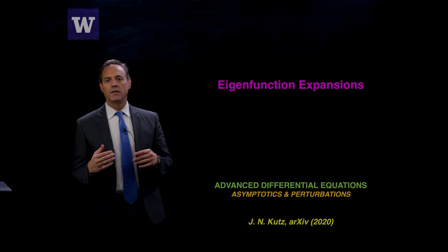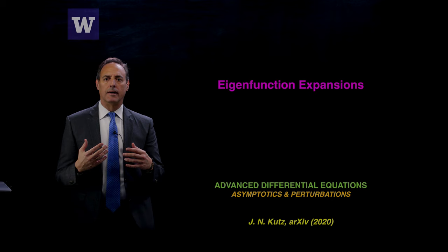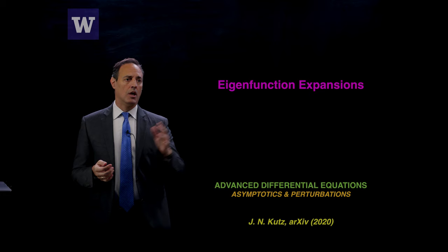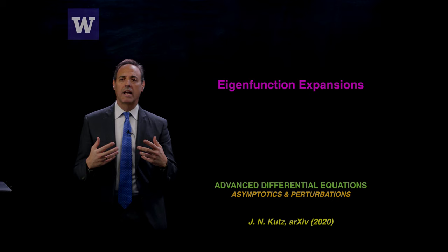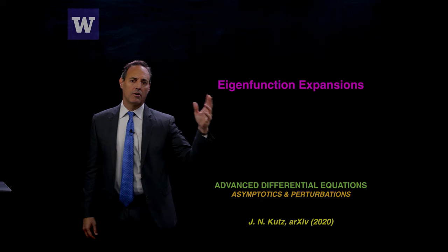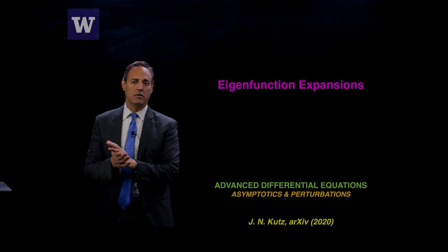We're going to continue on to start thinking about LU equals F type problems, which are functional boundary value problems. They're very much like AX equals B in many ways, except L is now a differential operator living on some domain. We're going to move into infinite dimensional spaces and talk about one of the solution techniques using eigenfunction expansions. Eigenfunction expansions are very much like solving AX equals B using eigenvector expansions, and we're going to lay down the foundations for writing down solution representations in terms of eigenvalues and eigenvectors or eigenfunctions, depending on whether you're in a finite or infinite dimensional space.